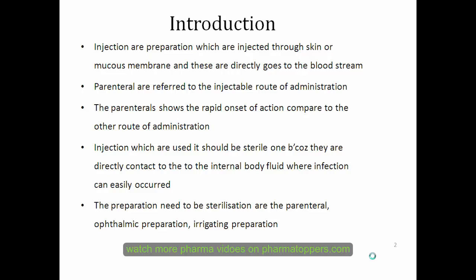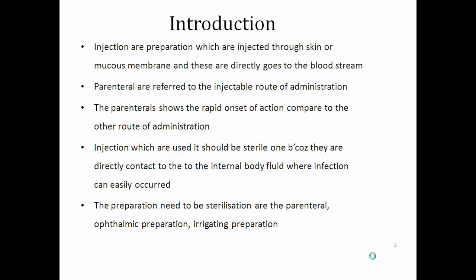If parenterals are not sterile, they go into the internal body and produce infection — that's why we need the sterile form. The second criterion is pyrogen-free. Pyrogens are products of the metabolism of microorganisms, which may be bacteria or viruses. Primarily, pyrogens are proteins, carbohydrates, or peptides. The pyrogens produced from gram-negative bacteria are very harmful to the body.